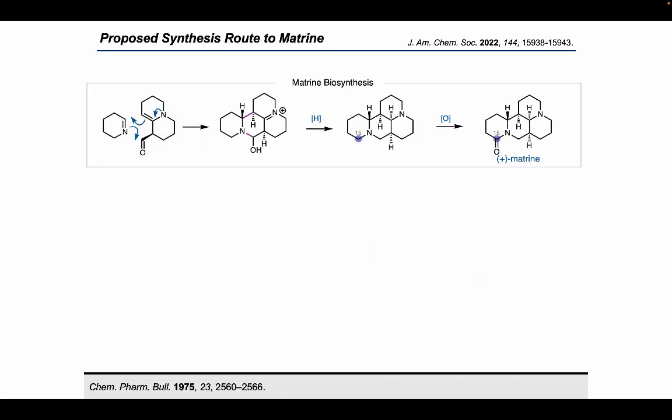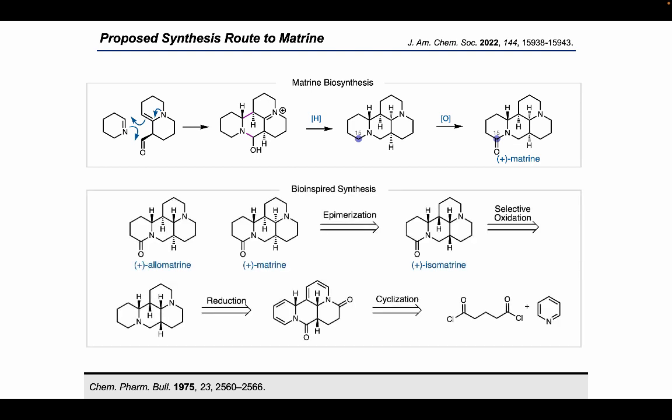For our proposed synthesis route to matrine, we were inspired again by the biosynthesis. In the biosynthesis, after the complete tetracycle of the natural product is formed, it is completely reduced to this diamine skeleton. This is then oxidized to the natural product selectively. So we proposed, since we have already got our tetracycle in hand, which has all of the carbon framework of matrine installed, we could do a complete global reduction to access this diamine, followed by a late-stage oxidation selectively to access isomatrine. From there, we could epimerize isomatrine into both matrine and allomatrine, which was reported in its isolation paper.